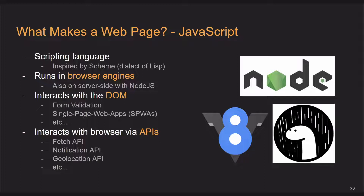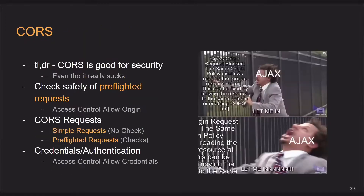Things like the Notification API — this is how you get those pesky notifications from all the websites that ask if they can send you notifications, like Gmail. There's also a Geolocation API, so you can geolocate your users. I recommend you browse the Mozilla Developer Network (MDN) — they document these very well and are some of the best documentation out there for web content. And never forget W3Schools as well.